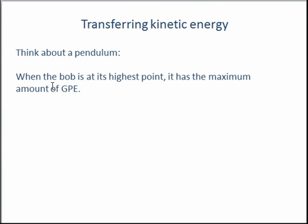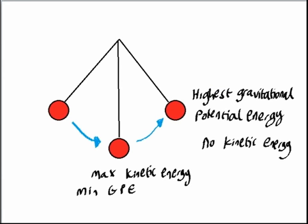And essentially, when the bob is at the highest point, we need to think about gravitational potential energy, which we talked about in the previous video. Gravitational potential energy is the highest here because it is the furthest point from the surface of the Earth. When we're working out gravitational potential energy, the height factors into the equation, and so when the height is higher, there is more gravitational potential energy.